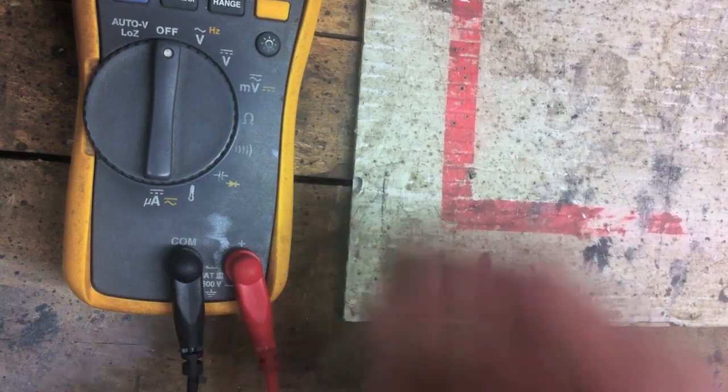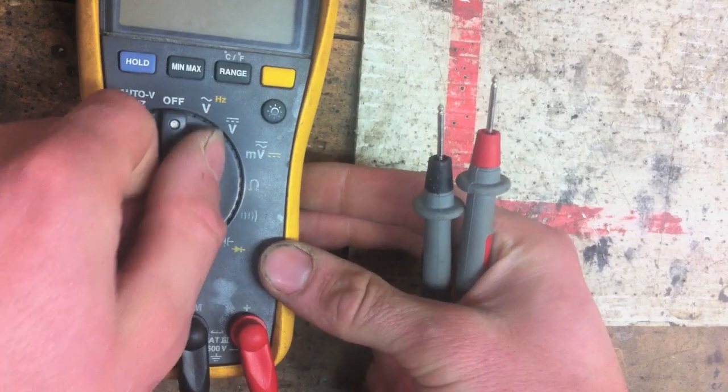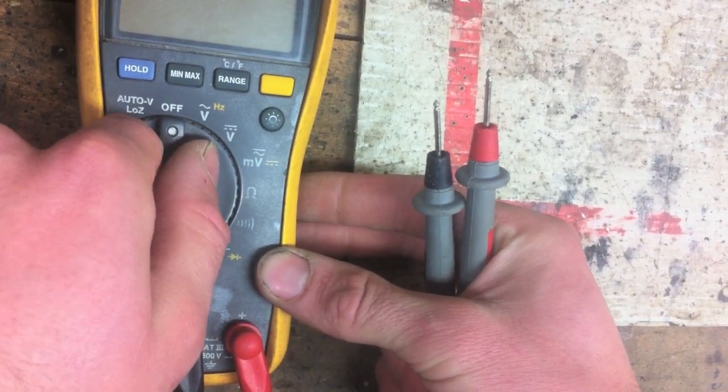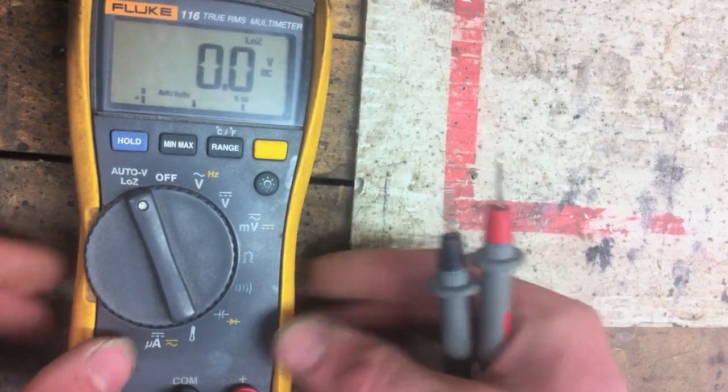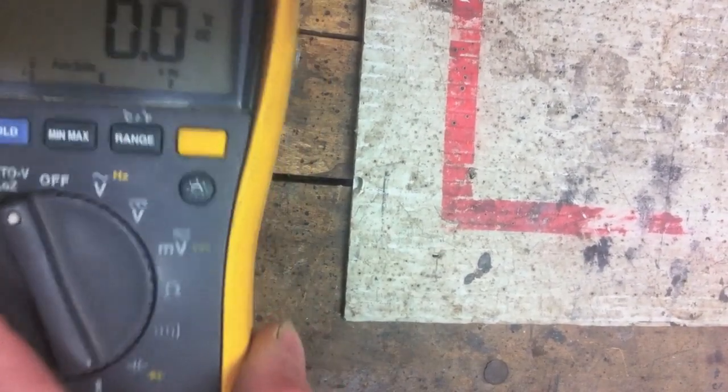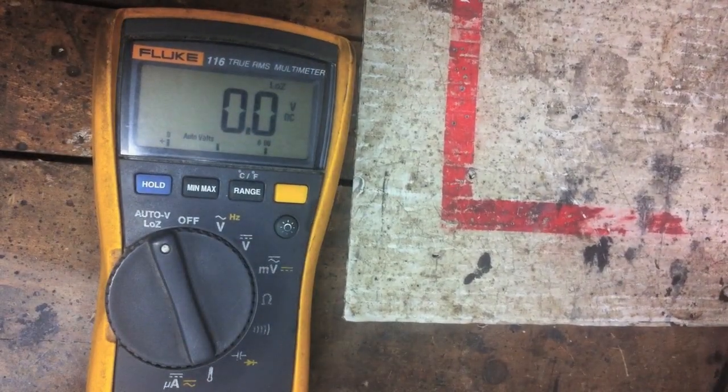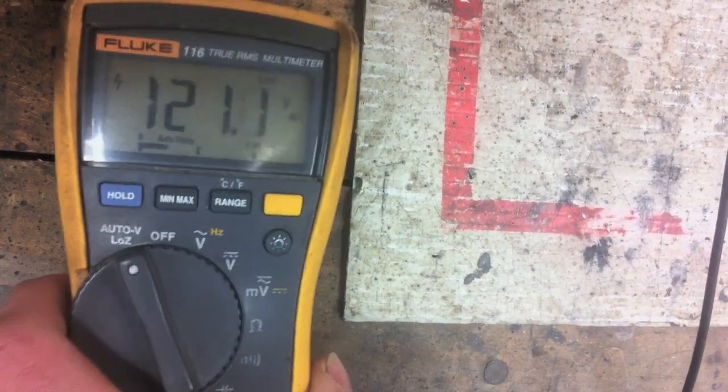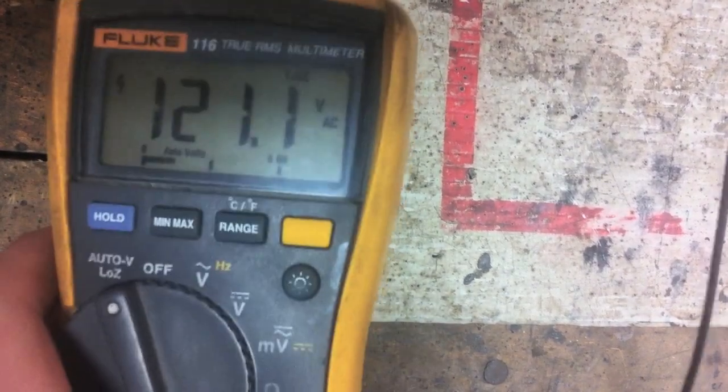The meter will check pretty much anything that you could possibly imagine. It's got auto volts, low Z. So if you're not sure if it's DC or AC volts that you're looking to measure, just switch it to auto low Z. So it defaults to DC. I'll measure a receptacle here. Then I went to 121 volts AC, it's showing right on the corner here.